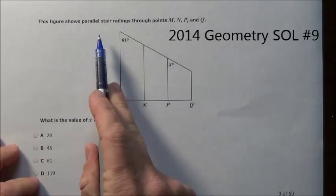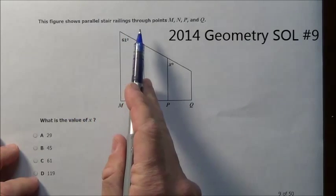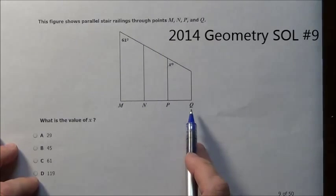Here's problem 9. It says this figure shows parallel stair railings through points M, N, P, and Q.